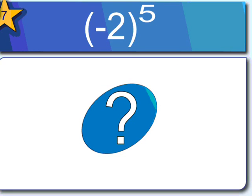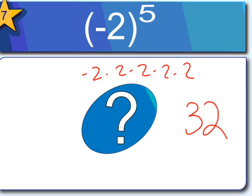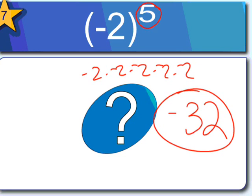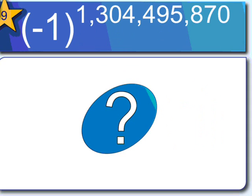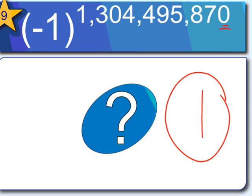Negative 2 to the 5th power — 2 to the 5th is 2, 4, 8, 16, 32. Since the exponent is odd, the result is negative 32. Negative 1 to the 13th power — the answer is 1; because the exponent is odd, it's negative 1. Finally, negative 1 to the 1,304,495,870th power — that's an even number, so the result is positive 1. That's how you work with exponents that have negative bases.